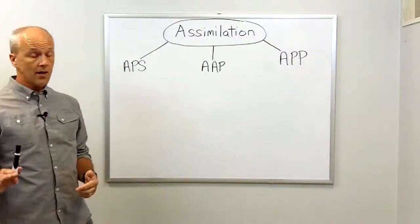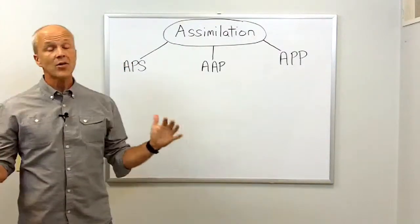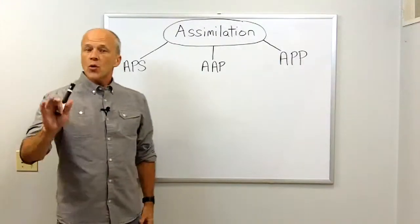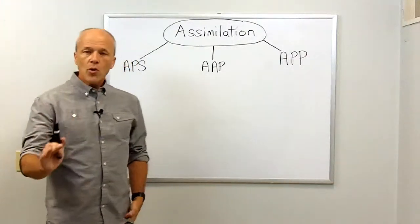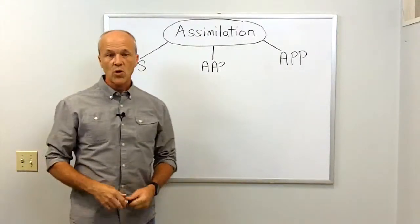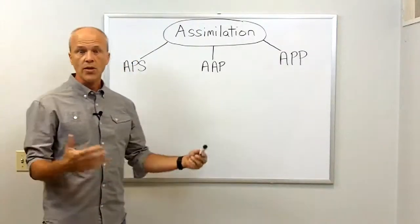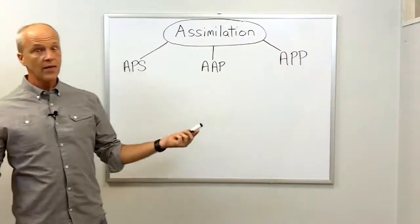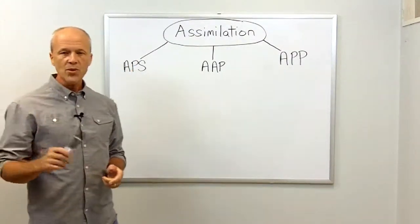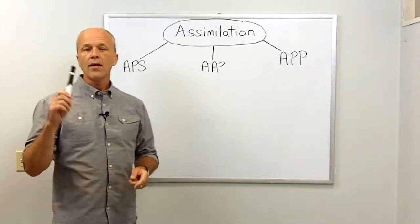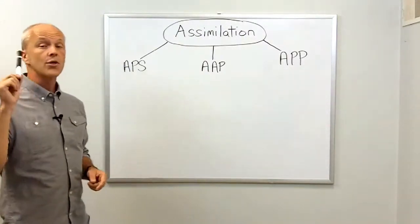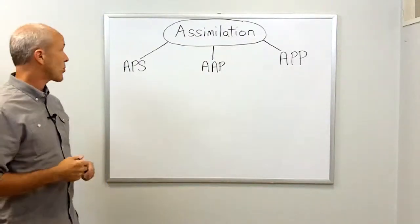When I think assimilation, I think Toy Story. Stay with me. Toy Story is actually, in my opinion, a movie in many ways about assimilation. You've got this guy, Buzz Lightyear, who joins a group of toys and he feels like a foreigner. So we're going to talk about three scenes from Toy Story that can help us see how technology could leverage the assimilation process.